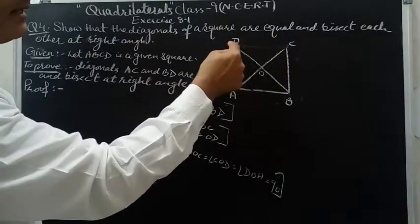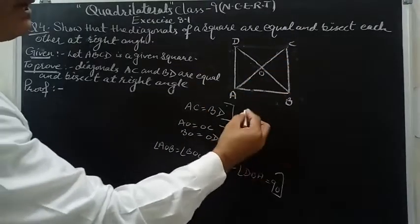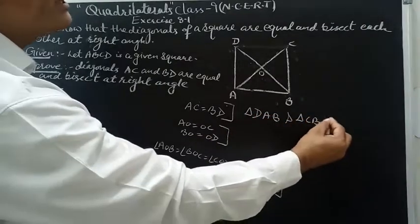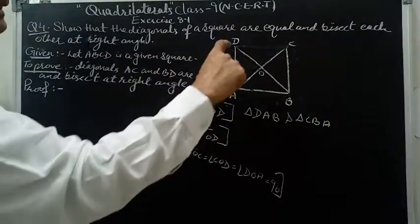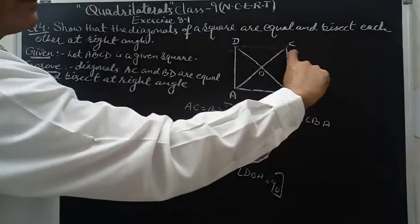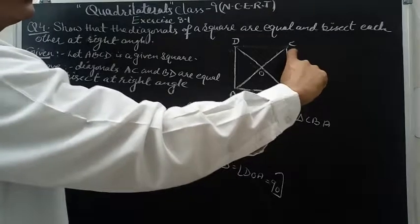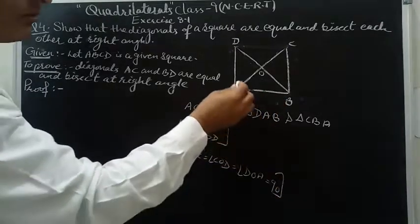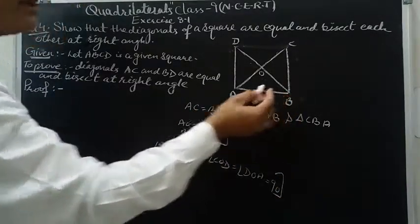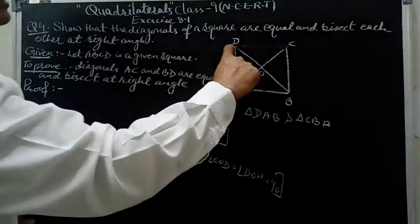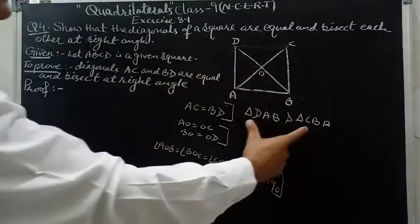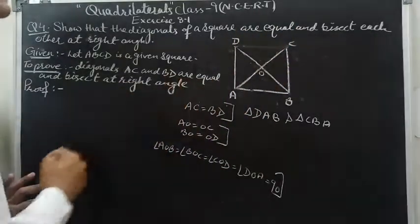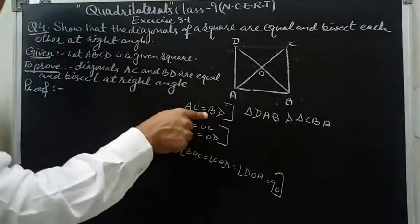To prove diagonals are equal, we take triangles DAB and CBA and make them congruent. AD equals BC because these are sides of the square. AB equals AB because it is common. Angle DAB equals angle CBA because each angle of the square is 90 degrees. By Side-Angle-Side (SAS), the two triangles are congruent, and therefore BD equals AC by CPCT.